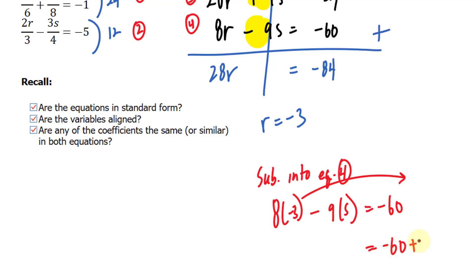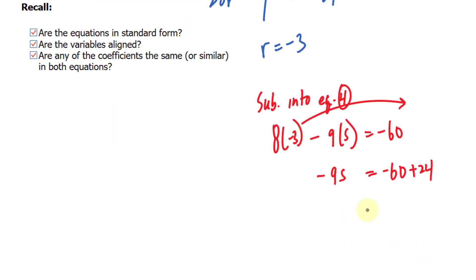And negative 9 S is still on the left side. This becomes negative 36. And dividing both sides by negative 9 gives positive 4. Two negatives when divided give positive output. And therefore, our answers are negative 3 for R and positive 4 for S.